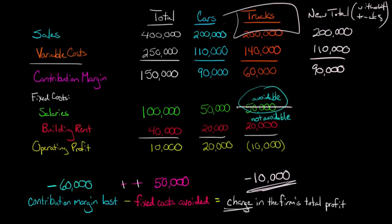We got rid of that $50,000 of the salaries. Half the salaries are gone, so now the salaries total for the firm is just $50,000. But we still have $40,000 in building rent. We were splitting it up before, but if we get rid of the trucks, we still have to pay the full $40,000 in rent.